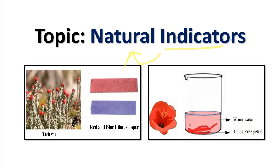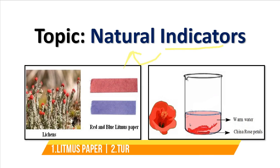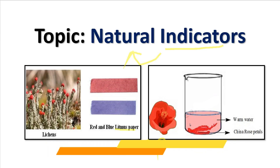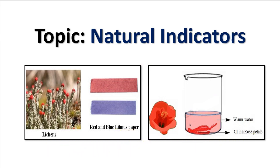Today's topic is indicators — specifically natural indicators. In our syllabus we have three types of natural indicators: first is litmus paper, second is turmeric powder, and third is china rose. We will understand each of them one by one. Natural indicators help us find out the nature of an unknown substance.